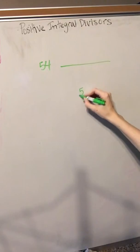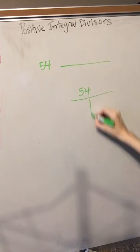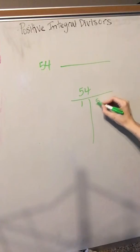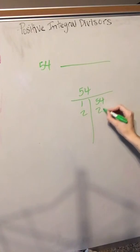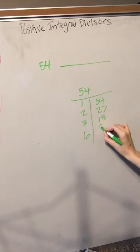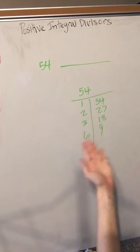So what you can do is you can imagine a little 54 and you can make yourself a little imaginary table in your head. You can go 1 times 54, 2 times 27, 3 times 18, and 6 times 9. So you go, oh, there's 8.